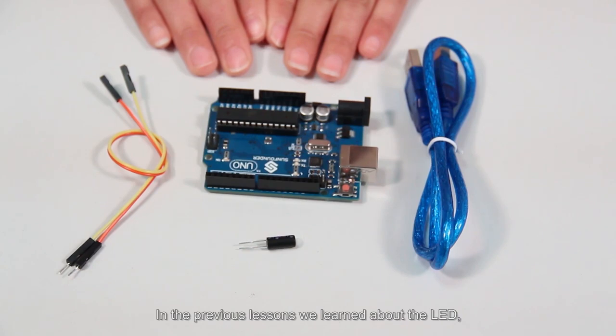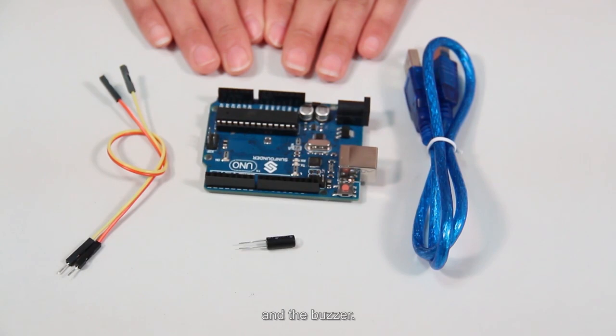In the previous lessons, we learned about the LED, the i2C LCD1602, and the buzzer.